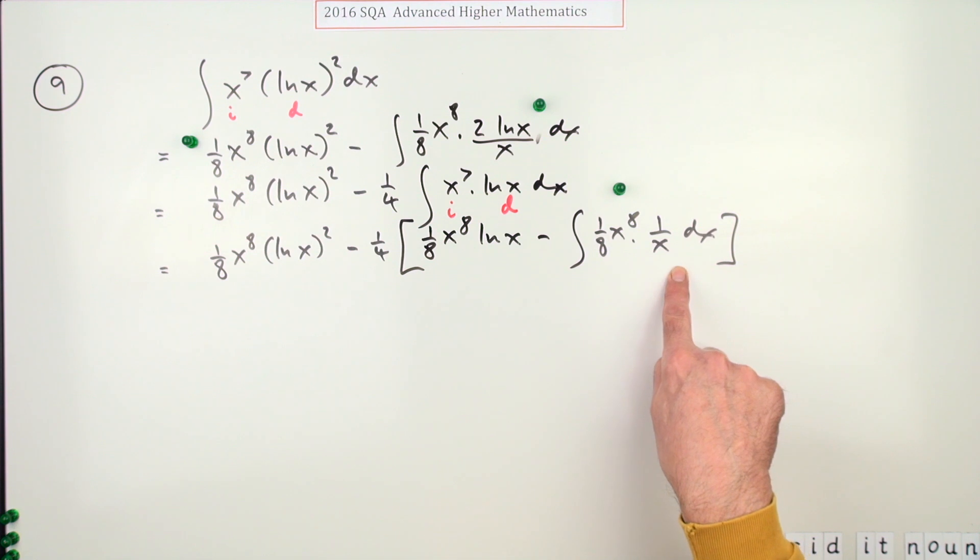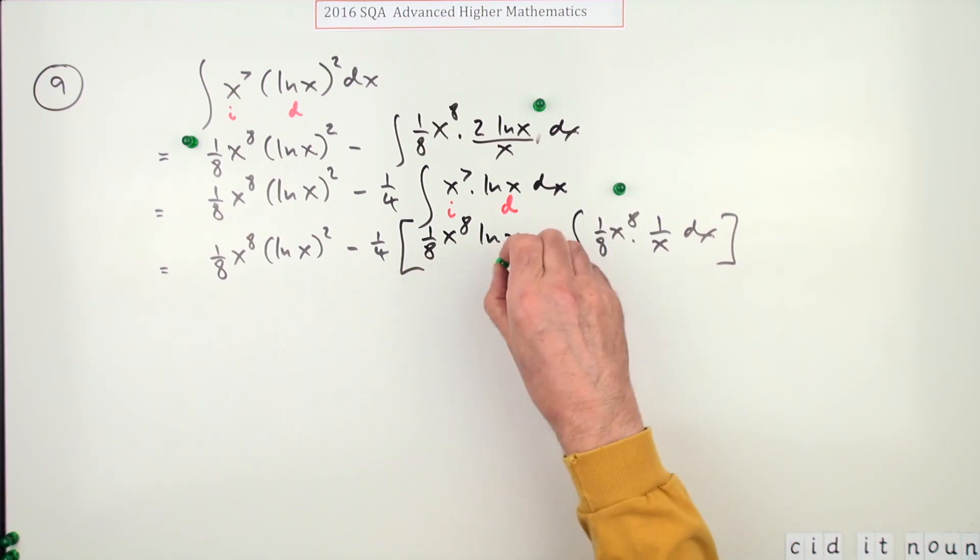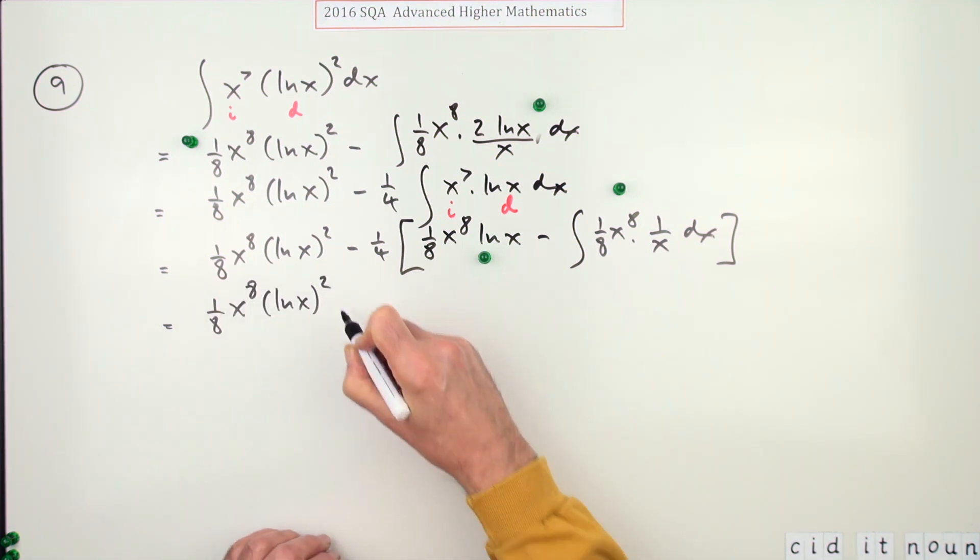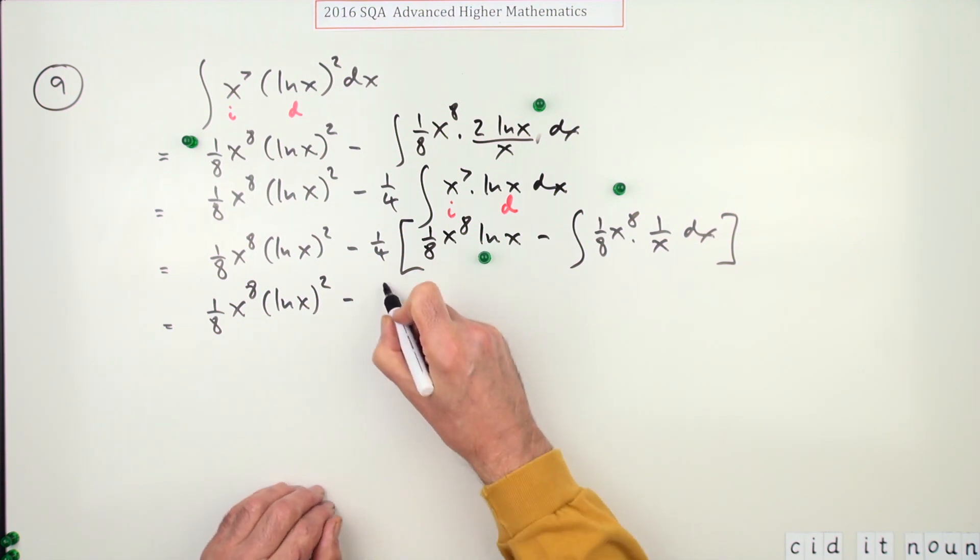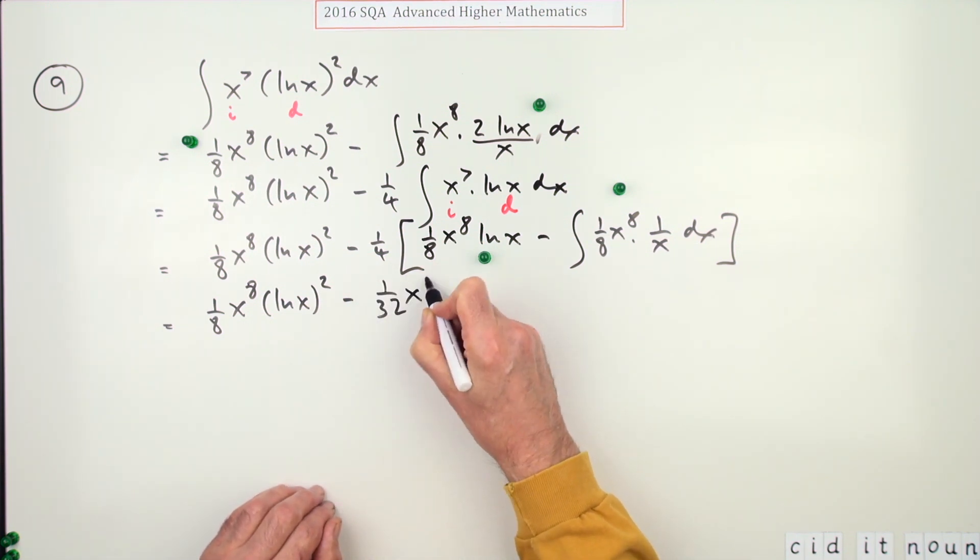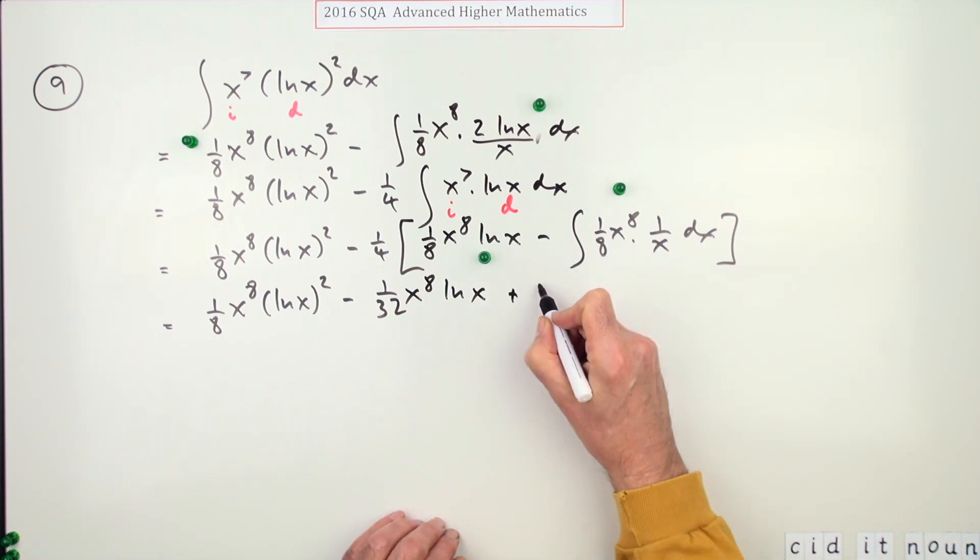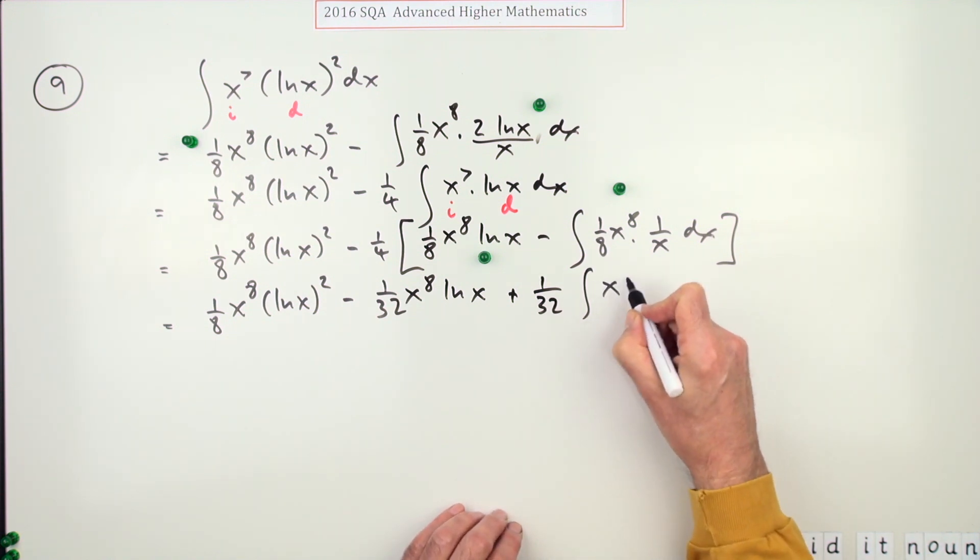Now, knowing to start again and beginning it gives you the next mark. This still needs to be tidied. So copy it down. You could tidy up that first part: one upon 32, x to the eight ln x, and then this part's going to be plus one over 32 times the integral of x to the seven, goes to dx.